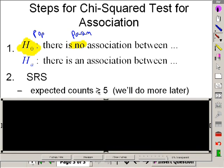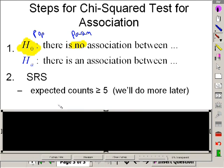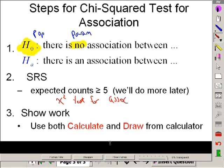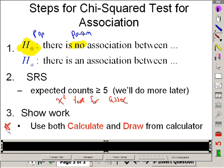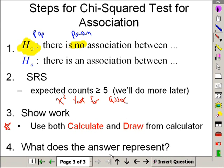Step two: SRS, our expected counts, again, has to be greater than or equal to five. Somewhere here you want to put chi-squared test for association. And I'm going to show you about this expected counts piece here in a moment. Step three will be your work. And you'll notice I have this: use calculate and draw. We're going to do this again under stat tests. And then step four, what does the answer mean?